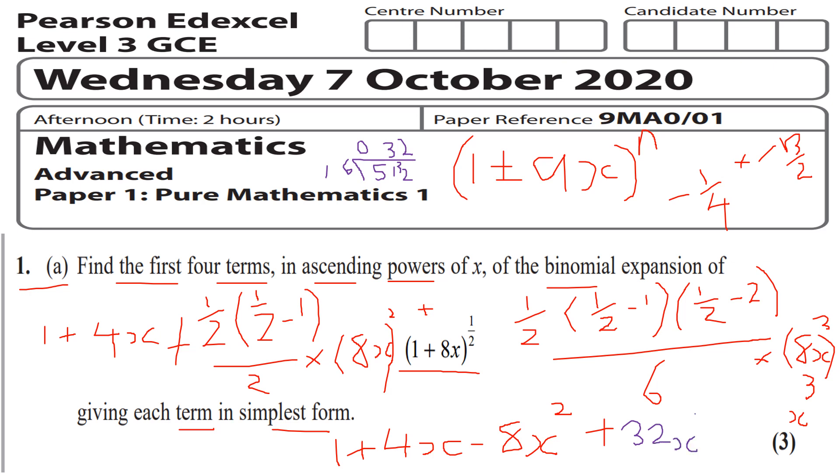Plus 32x³ plus dot dot dot, and these are the first four terms of my binomial expansion (1 + 8x)^(1/2). Now the last part to remember guys - if it's not a one there, you factorize out the component until you have 1 plus or minus ax. It always has to be in that form and use your formula booklet for the binomial part.